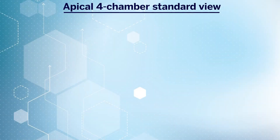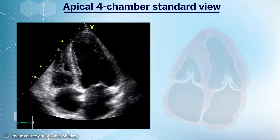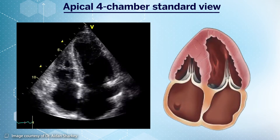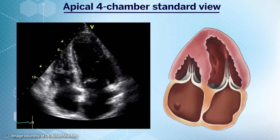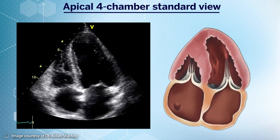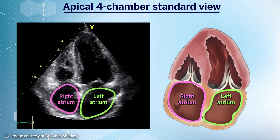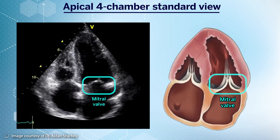The standard view obtained in this window should appear as depicted in this video clip and cartoon representation. Here we can clearly visualize all four heart chambers — that is the two atria and two ventricles — along with the mitral and tricuspid valves.